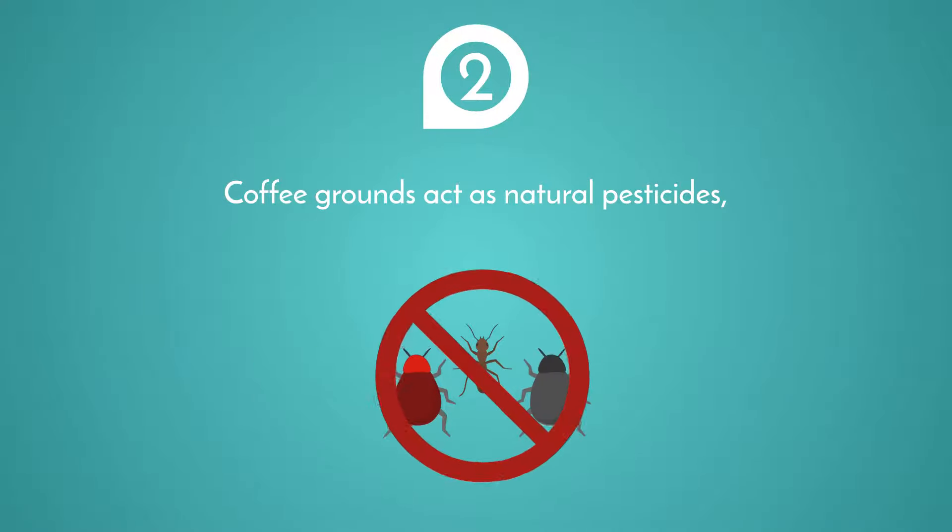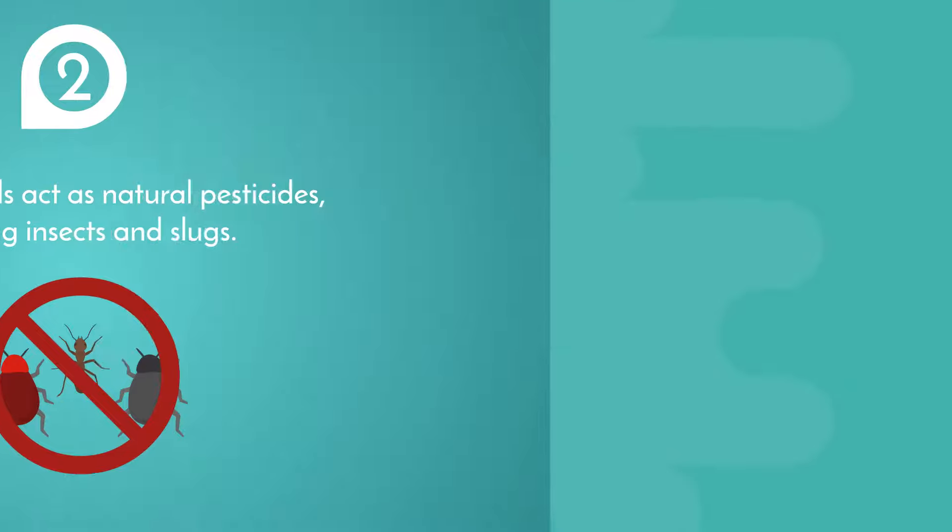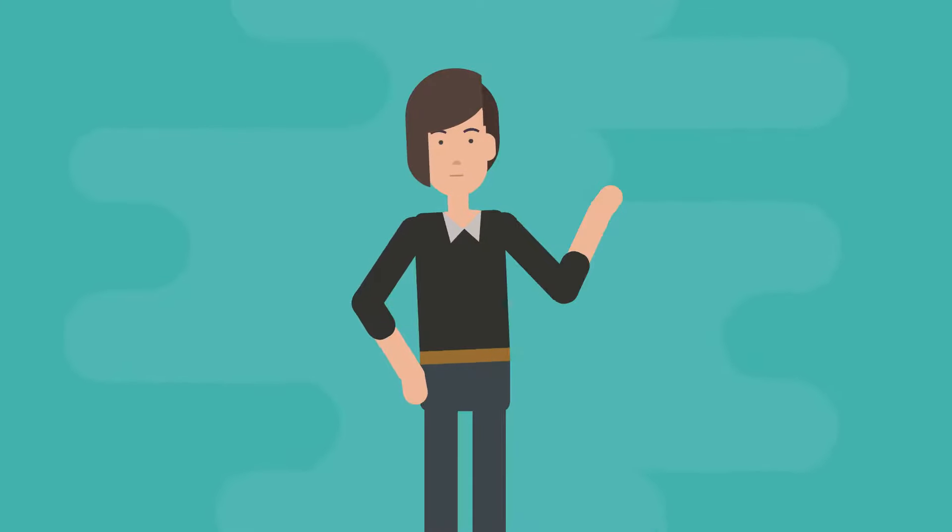Coffee grounds act as natural pesticides, repelling insects and floods. Now, let's take a look at the main drawbacks.